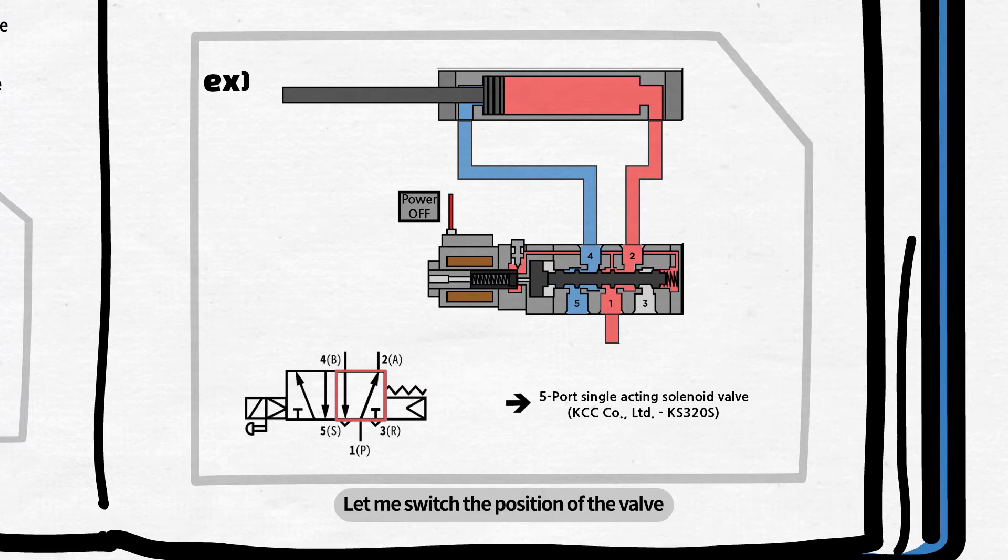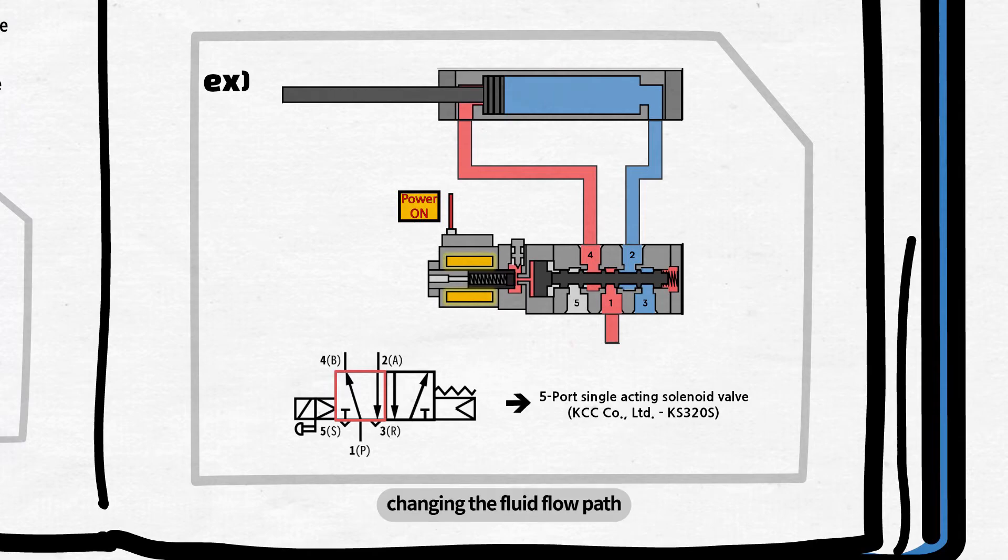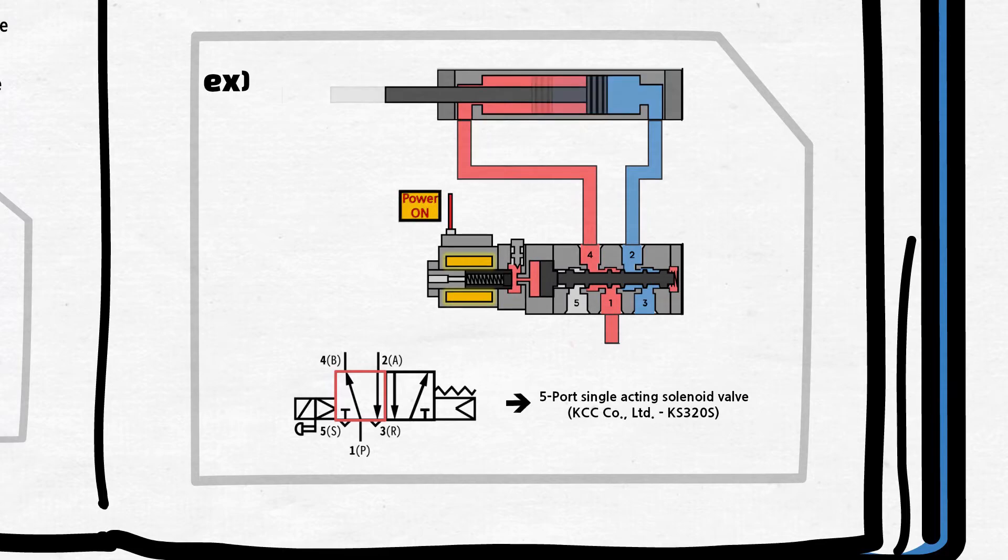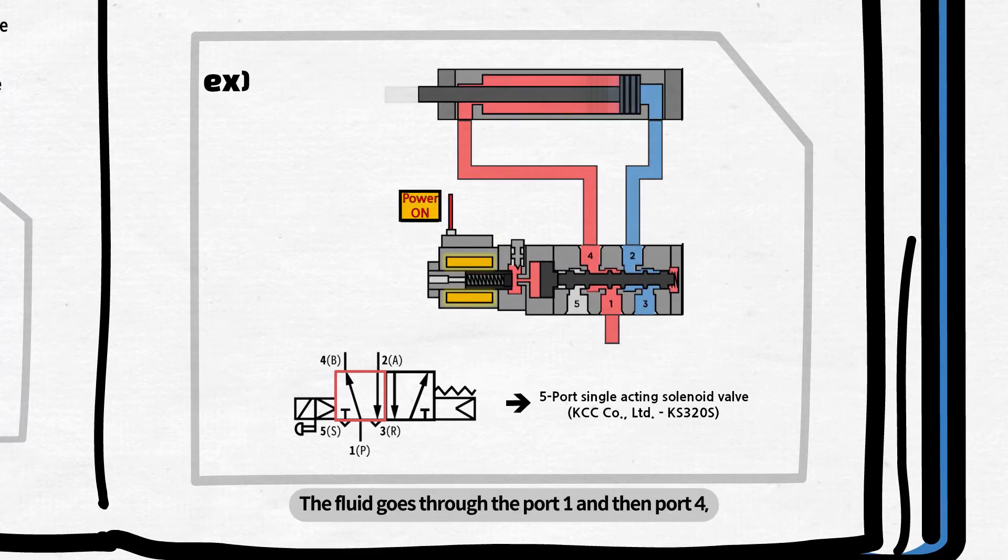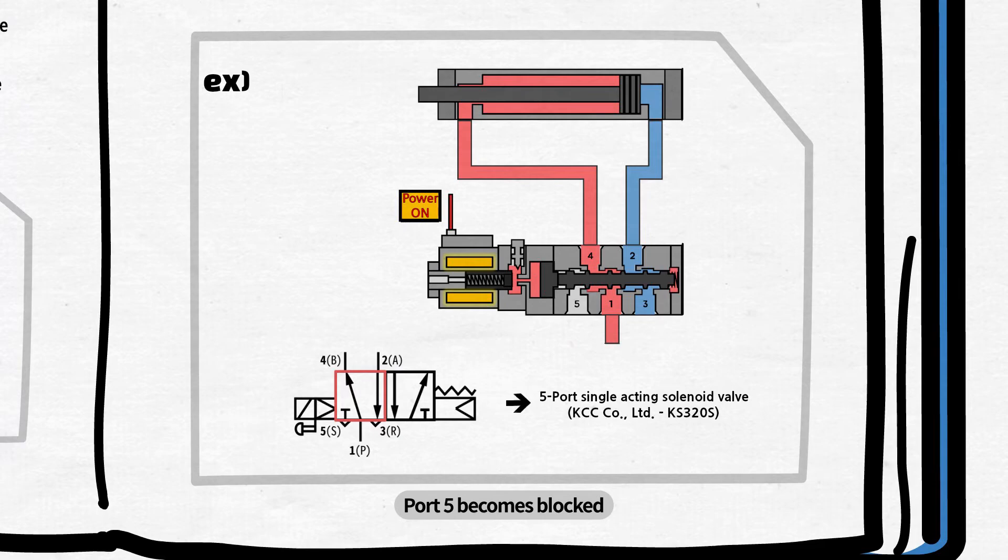Let me switch the position of the valve. Power is now given to the solenoid on the left side. This will cause the spool to move, changing the fluid flow path. The fluid goes through the port 1 and then port 4, and is eventually discharged through the port 2 and then port 3. Port 5 becomes blocked.